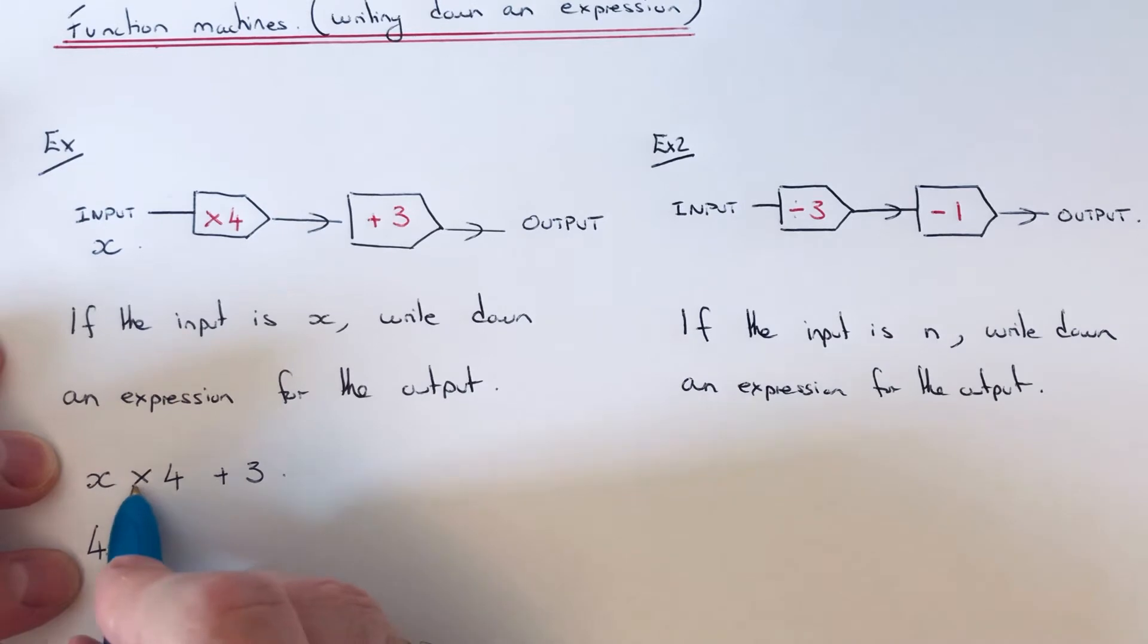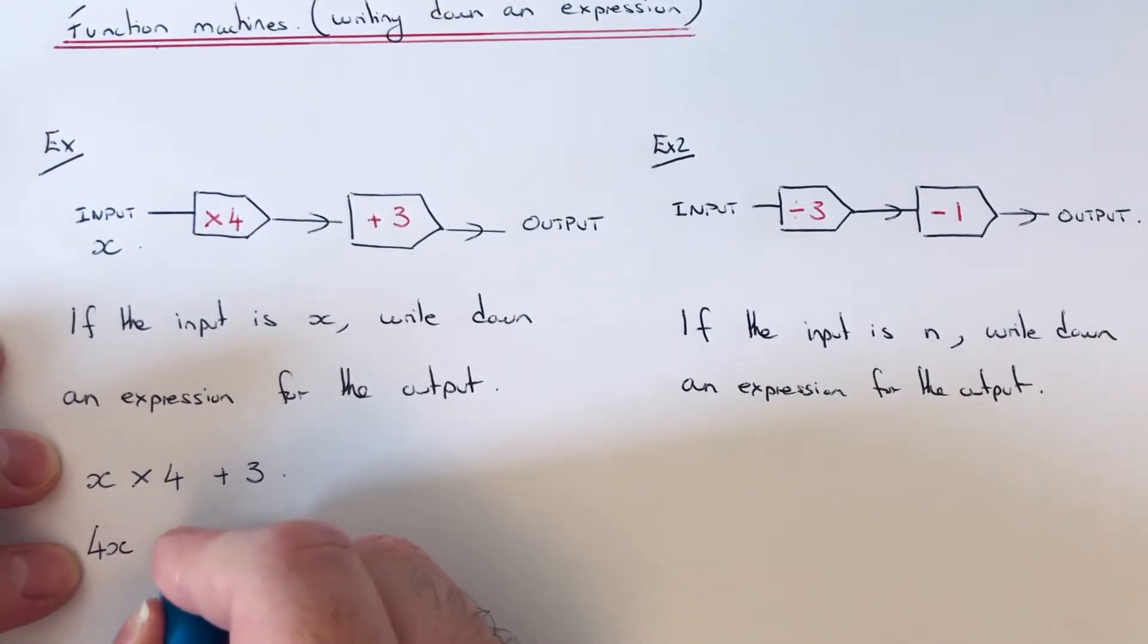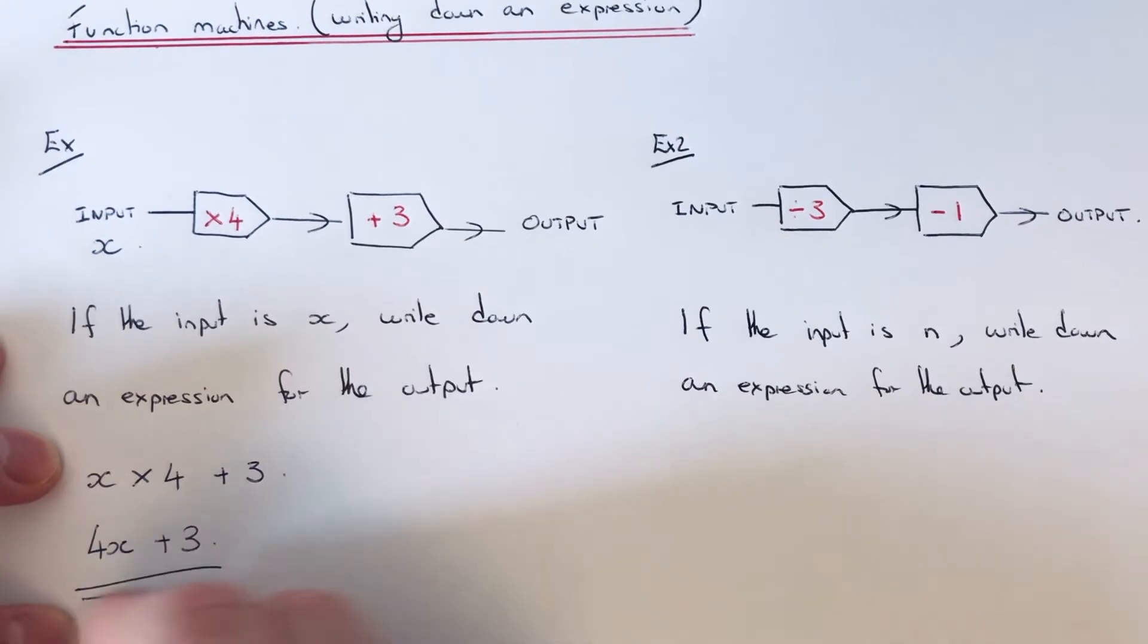You don't need to put the multiplication sign in because when you've got a number and a letter together, it means they're being multiplied. Then we just put the plus 3 at the end. So that is our final expression for the output.